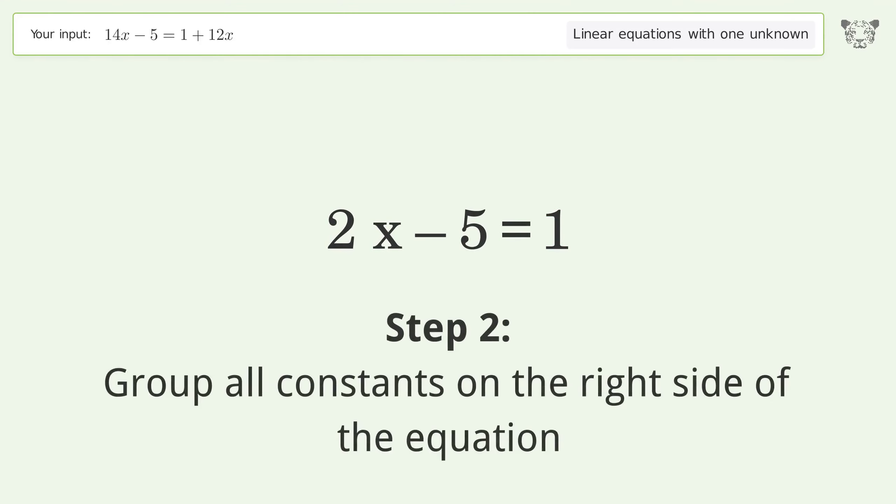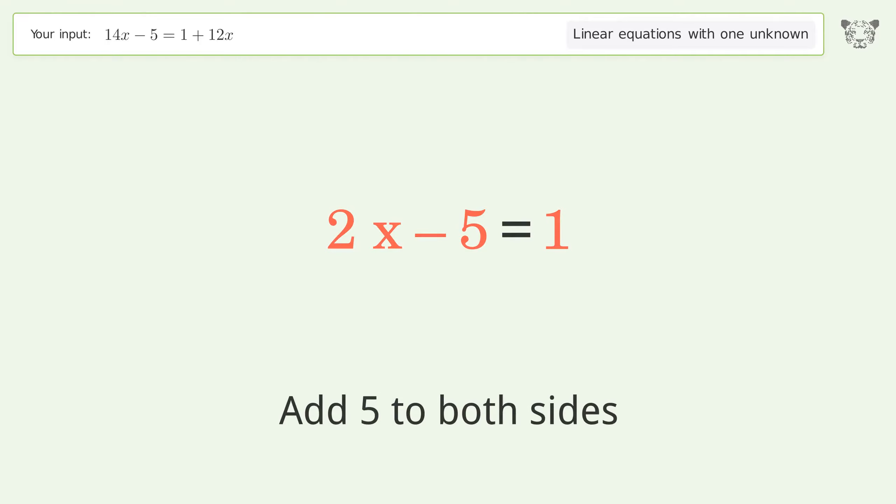Group all constants on the right side of the equation. Add 5 to both sides. Simplify the arithmetic.